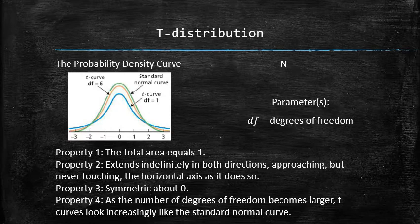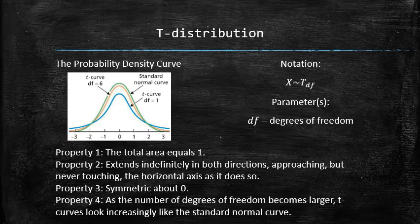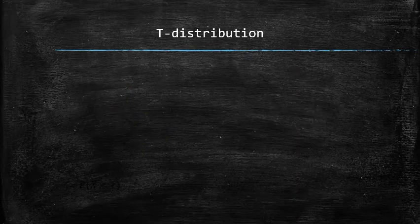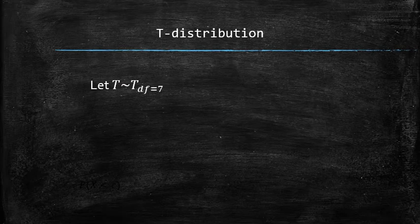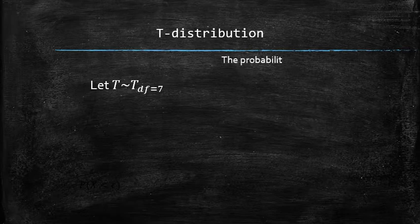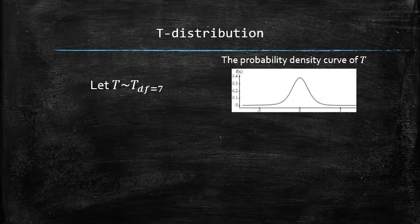We would use the following notation to label a variable that has a t-distribution with df degrees of freedom. Let t be a random variable that has t-distribution with seven degrees of freedom. Then the probability density curve of t takes a very specific shape determined by its parameter degrees of freedom which is equal to seven.